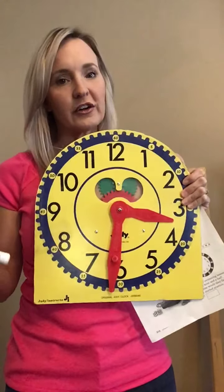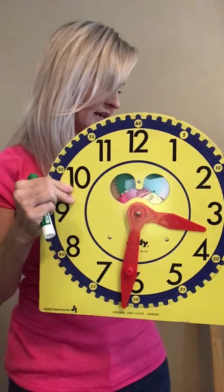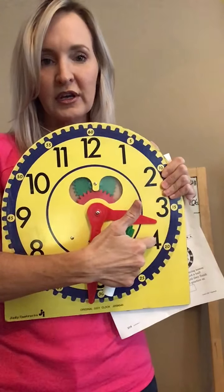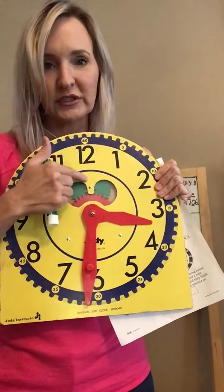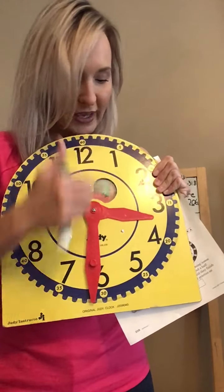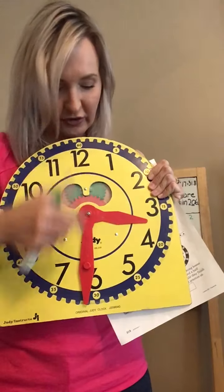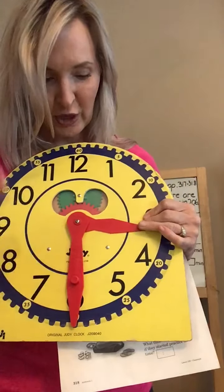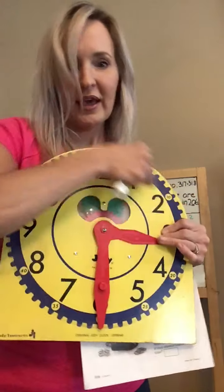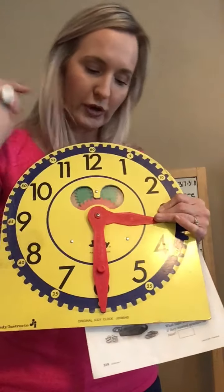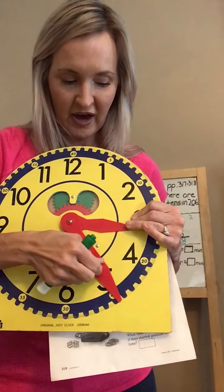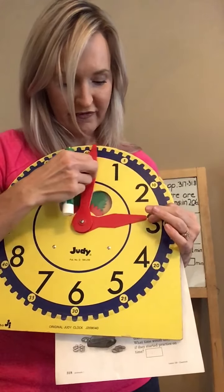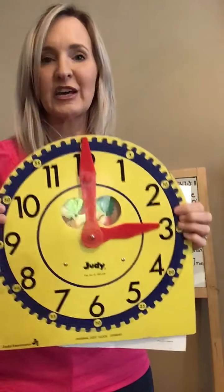They need to leave earlier. If it takes 30 minutes to get to the pool, we count backwards — counterclockwise — by fives: 5, 10, 15, 20, 25, 30. What time is it?